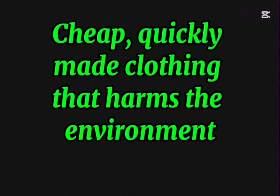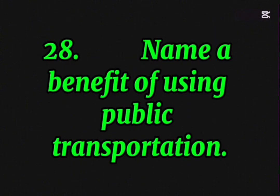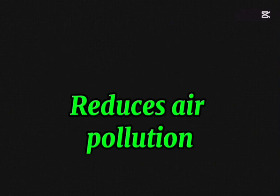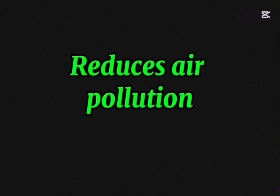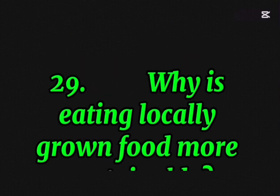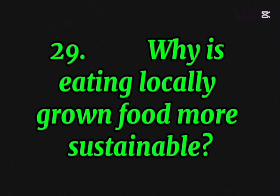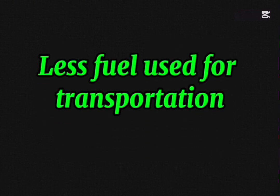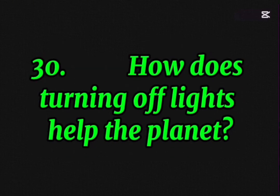Twenty-seven, what is fast fashion? Cheap, quickly made clothing that harms the environment. Twenty-eight, name a benefit of using public transportation. Reduces air pollution. Twenty-nine, why is eating locally grown food more sustainable? Less fuel is used for transportation. Thirty, how does turning off lights help the planet? It saves energy.